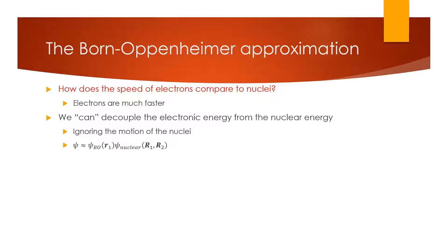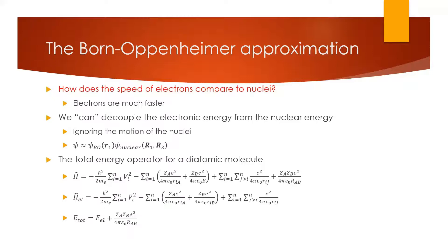Our Born-Oppenheimer electronic wave function talks about what the electrons are doing, while the nuclear wave function discusses what the nuclei are doing. The nuclei are, of course, vibrating and rotating, which is an important part of the total energy of the molecule. But in this section we are only really interested in what the electrons are doing — we're going to try to make some claims about MO theory — so we're going to ignore the motions of the nucleus.